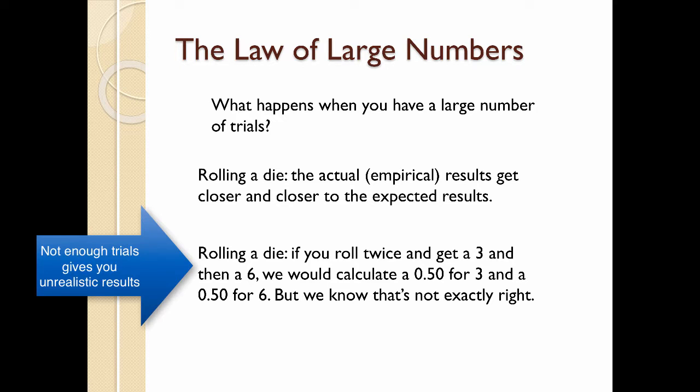If you take a die and you roll it only twice and use that to predict some probabilities. Let's say that when you rolled the first time, you got a 3, and that when you rolled the second time, you got a 6. So in the first case, we would calculate a 0.50 for 3, because we only rolled the die twice, and we get a 0.5 probability for the 6. But that somehow doesn't feel right.